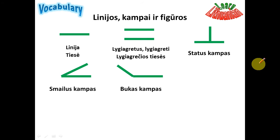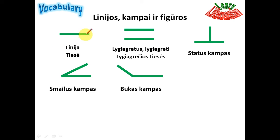Now let's see the lines, angles and shapes — linijos, kampai ir figūros. There are no shapes in this slide, but the next slide will show some others. This is 'linija', or 'tiesė'. 'Tiesė' is made from the word 'tiesus', and 'tiesus' means straight.